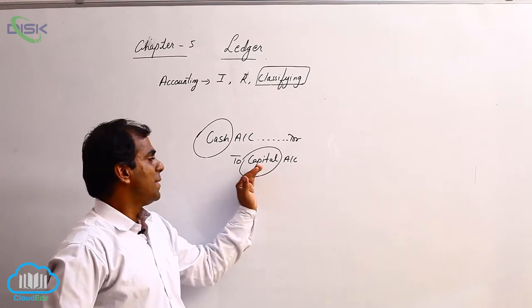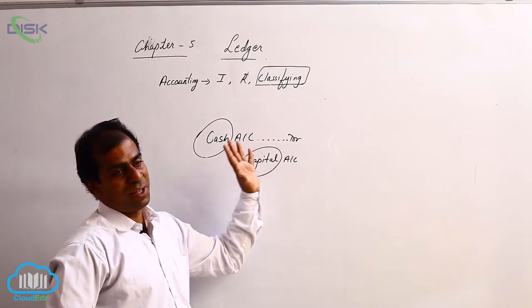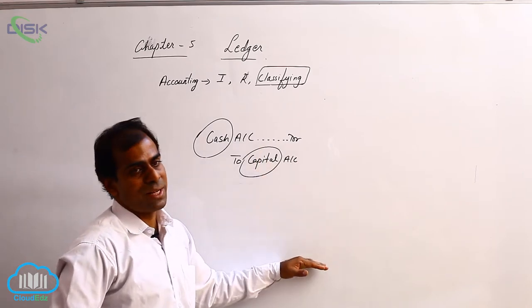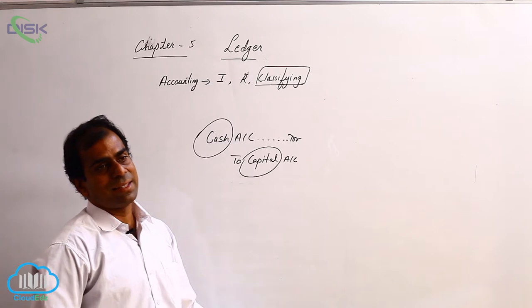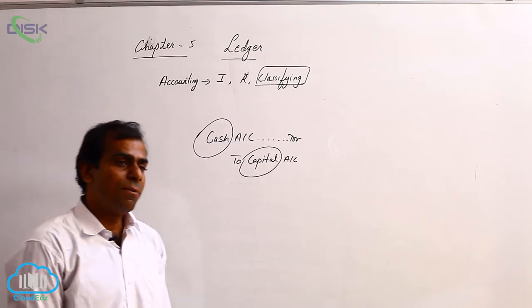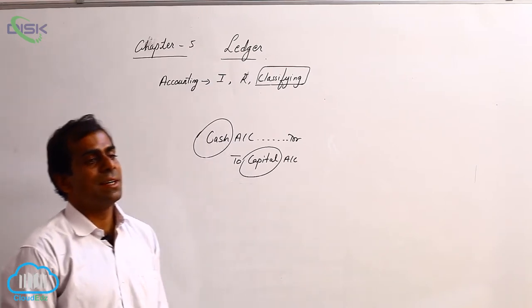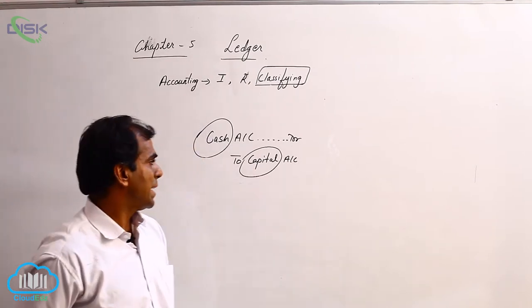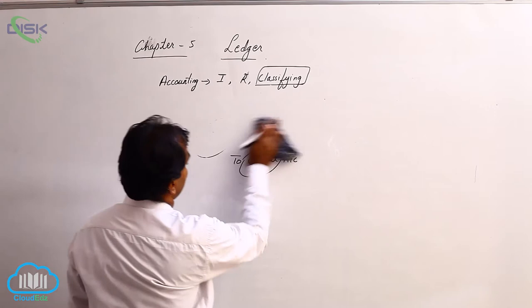So therefore we will collect all these amounts pertaining to capital at one particular place. So that is why we say Ledger is a summary of transactions relating to one particular head. So that is the technical usage of the word Ledger.